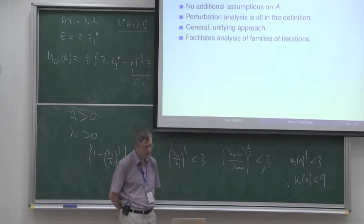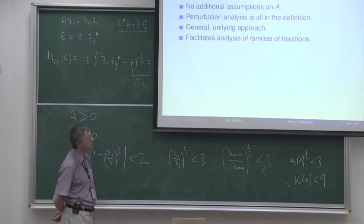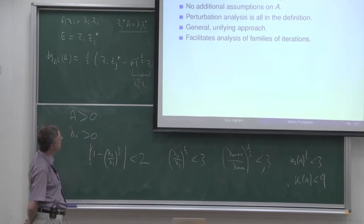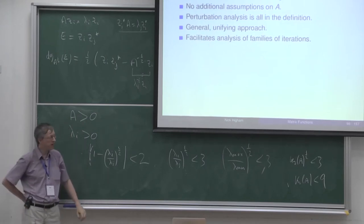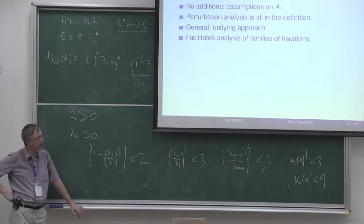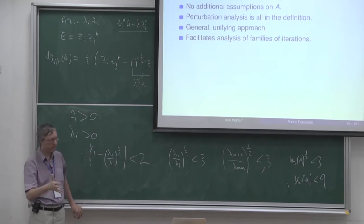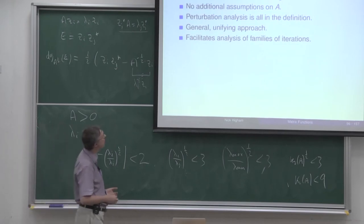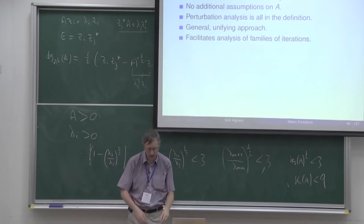To summarise, the advantages of this Fréchet derivative approach are: minimal assumptions on A are needed to get the condition for stability, and the perturbation analysis is all built into the definition. If you do it from first principles, you're always redoing the definition, expanding, and throwing away second-order terms. Starting from this definition, what remains is simply a bit of analysis to find some eigenvalues. This can sometimes be done quite generally for a whole family of iterations.